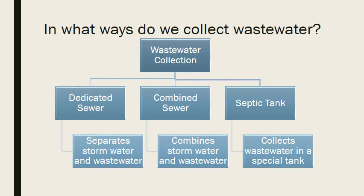When we talk about wastewater, we have to talk about how we collect it and where it comes from. We define collection in terms of urban and rural areas. In an urban area, you will have either a dedicated sewer line — which separates storm water runoff from wastewater coming from homes and businesses — or a combined sewer system, where storm water and wastewater are collected and transferred through the same system.